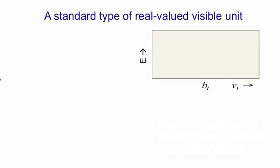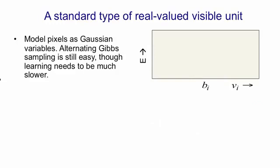The obvious thing to use is a linear unit with Gaussian noise. So we model pixels as Gaussian variables. We can still use alternating Gibbs sampling to run the Markov chain required for contrastive divergence learning. But we need to use a much smaller learning rate, otherwise it will tend to blow up.